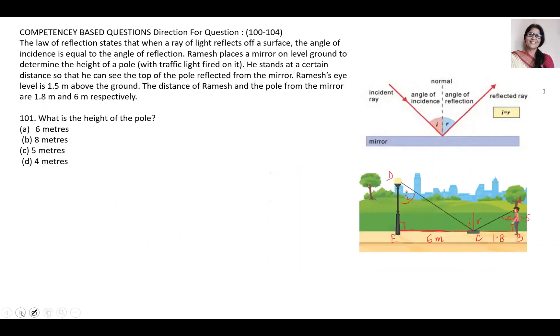Next one. What is the height of the pole? The options are 6 meter, 8 meter, 5 meter, or 4 meter.